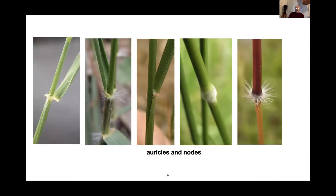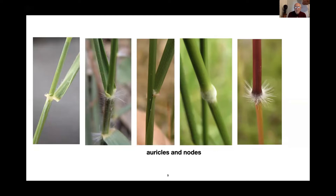Some other characteristics about grasses are the auricles and the nodes. The auricles are the base of the leaf that breaks away from the stem, and the pattern can be quite different. On the right we have two examples of nodes — where the various parts of the stems join together. One is white, making it a bit unusual; the next is sorghum, which has a structure like a ballerina skirt. Going back to the auricles, you can also see some have hair and some don't, and the auricle can come all the way around the blade or not. These are ways botanists help people to distinguish one species or genus from another.